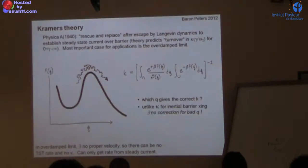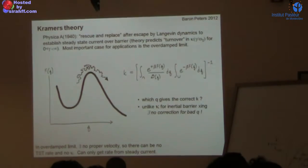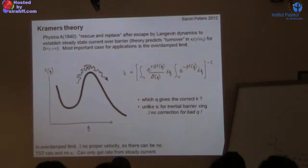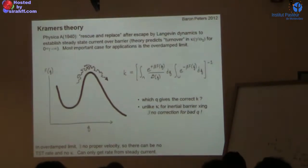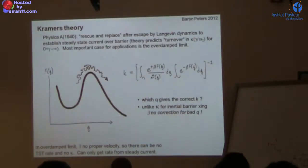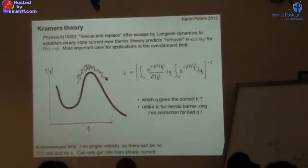The problem with this expression is that if you plug in different choices of q — different reaction coordinates — you get a different free energy F and a different diffusion coefficient D. Unlike the inertial barrier crossing case where you can compute kappa to correct yourself, if you choose the wrong reaction coordinate here, you just get a wrong number with no way to recover. Your work becomes worthless. So it's very important when using these frameworks to think carefully about what reaction coordinate to use.